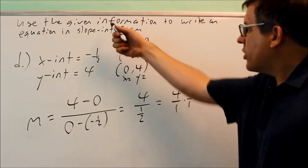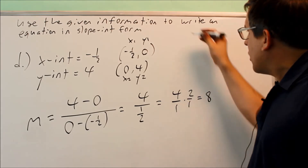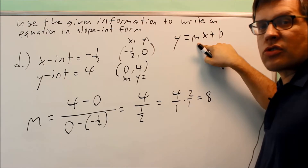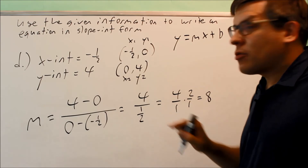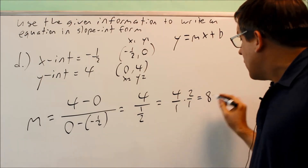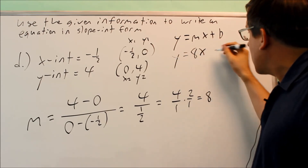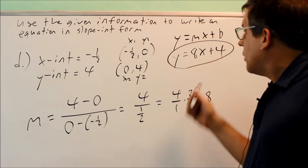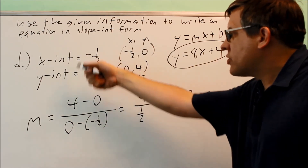To form the equation in slope-intercept form — y equals mx plus b — the slope m is 8 and the y-intercept b is 4 (already given). So putting that information in gives y equals 8x plus 4. That is the correct slope-intercept form for the given intercepts.